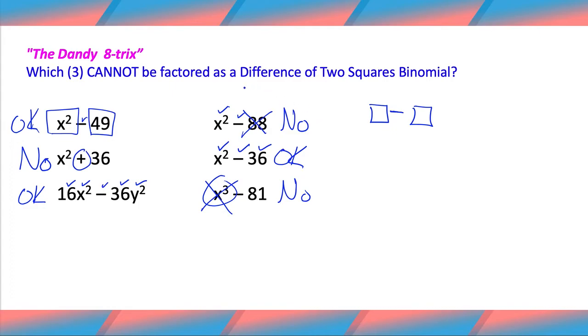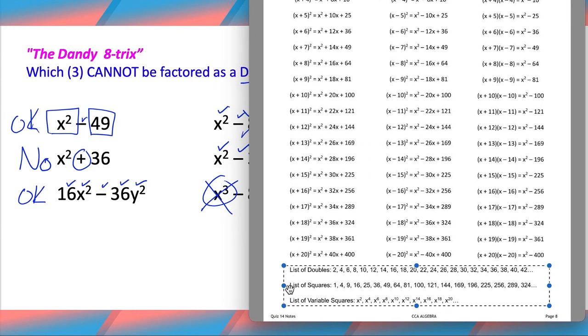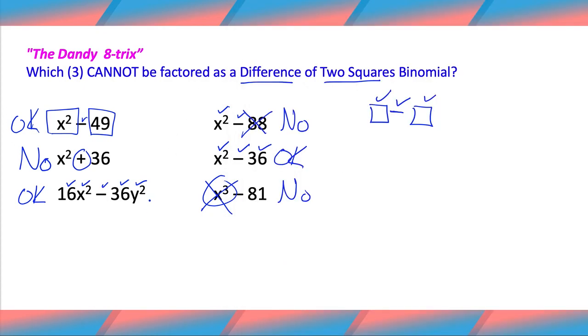All right, friends. That's about it. That's how you spot a difference of two squares. It literally must be a difference of two items that are squares. Again, if you need help, go to your 8-7 cheat sheet. There's a list of squares and square variables. Otherwise, we'll see you in class.